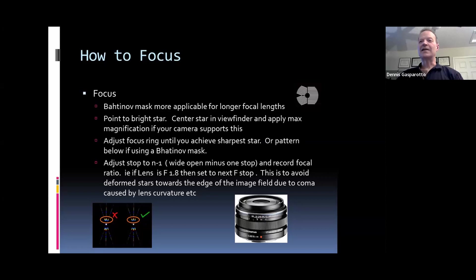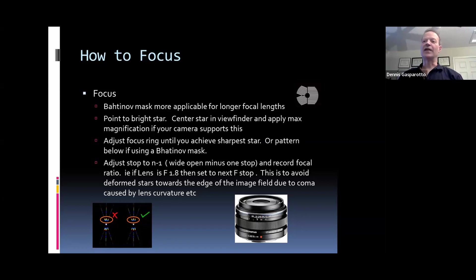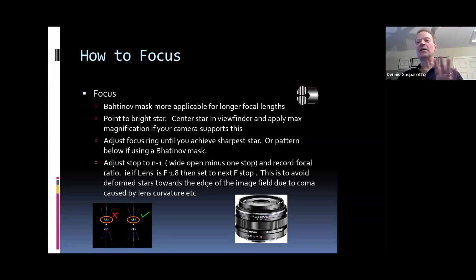Keep in mind that typically you're not going to be able to photograph wide open. If your lens is F1.8 you can afford to go down a couple of F-stops with no problem. But shooting wide open will give you coma and star distortions at the edge of the field, and you'll have to crop your image. Some very expensive lenses with special glass work fantastic wide open, but most will require you to stop down a bit.